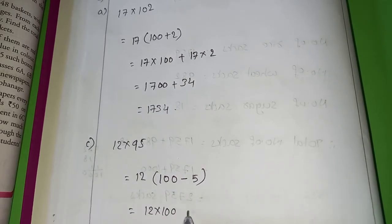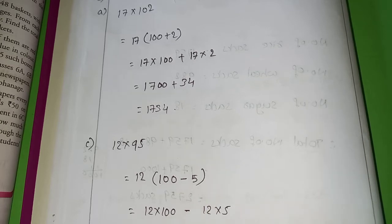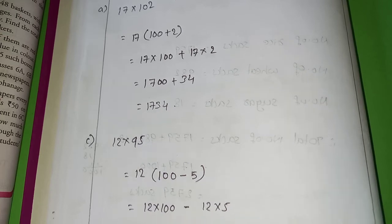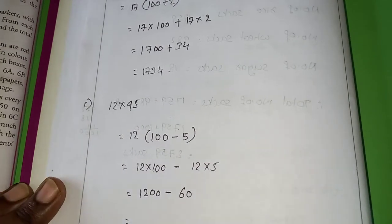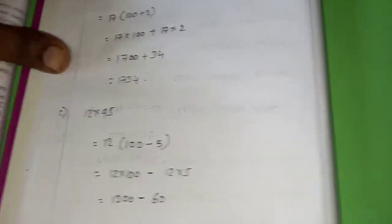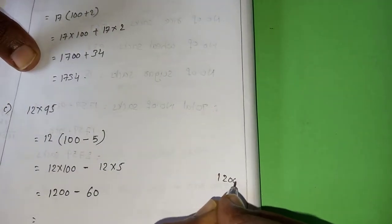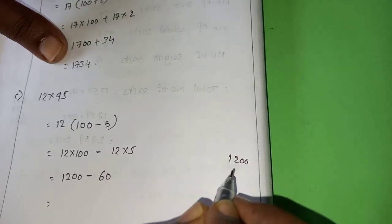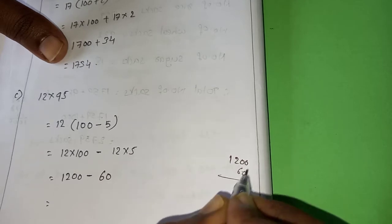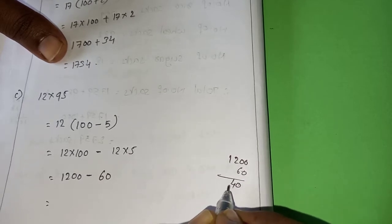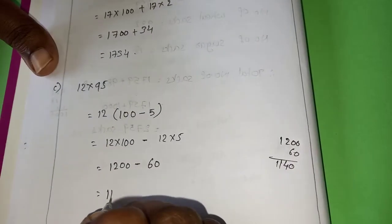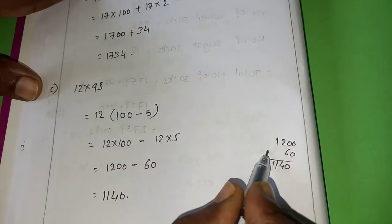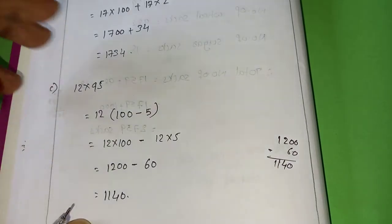Now, 12 into 100 minus 12 into 5. 12 hundred minus 12 is 60. Now, what is the answer? Calculate. Please calculate after the margin. I don't have space here. That is the reason I am doing here. 10 minus 6, 4. 1 and 1. 1140. So this is the answer.